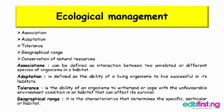Association can be defined as the interaction between two unrelated or different species of organisms in a habitat. Adaptation is defined as the ability of a living organism to live successfully in its habitat. Tolerance is the ability of an organism to withstand or cope with unfavorable environmental conditions in a habitat that can affect its survival. Geographical range refers to the characteristics that determine a specific or particular habitat.